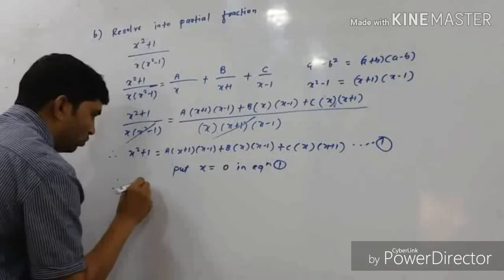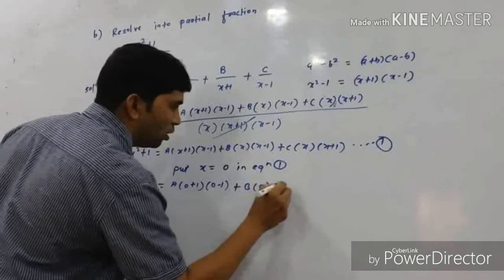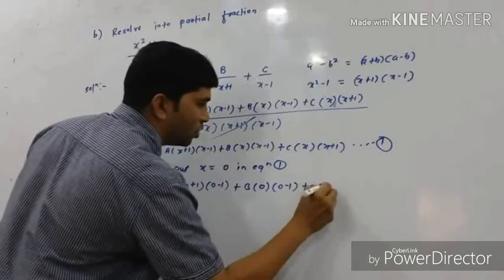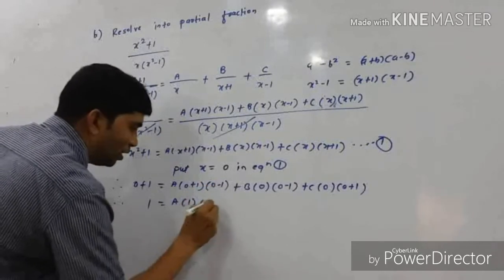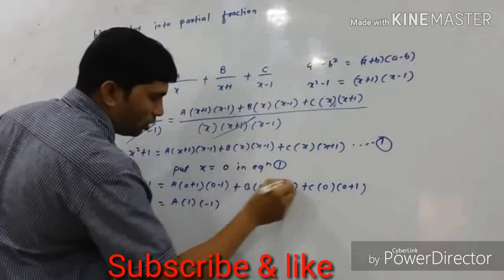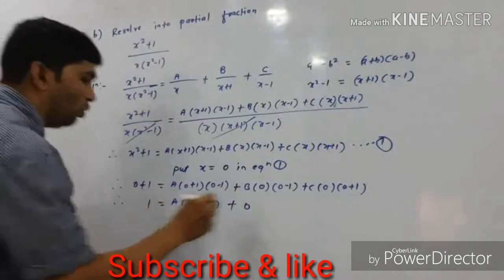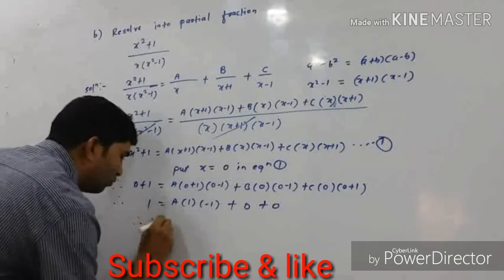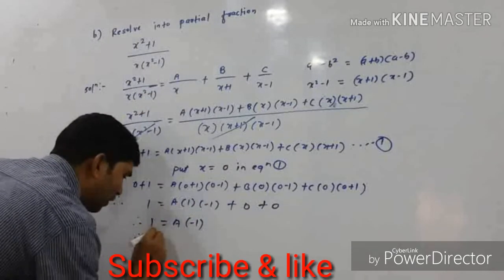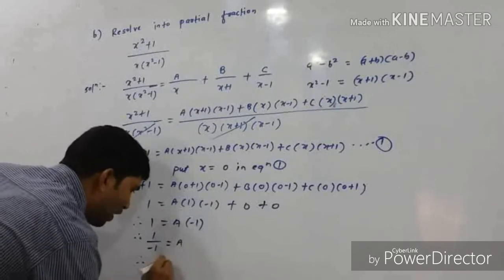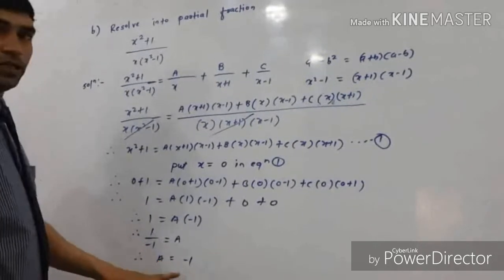Substituting x = 0 in equation 1: 0 + 1 = A(0+1)(0-1) + B(0)(0-1) + C(0)(0+1). The B and C terms are 0, so we get 1 = A(1)(-1) = -A. Therefore A = -1.